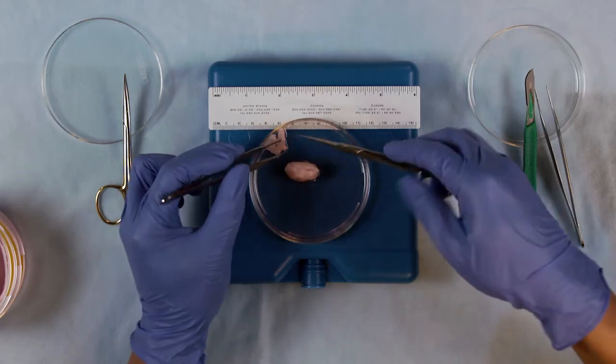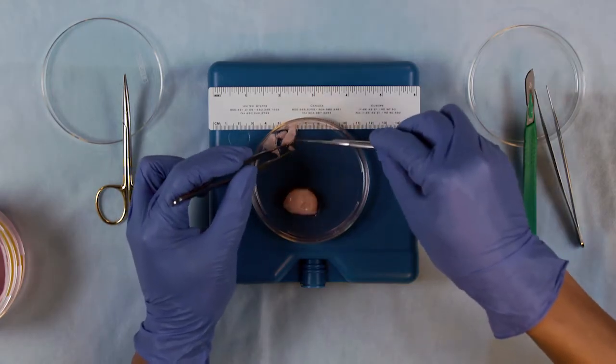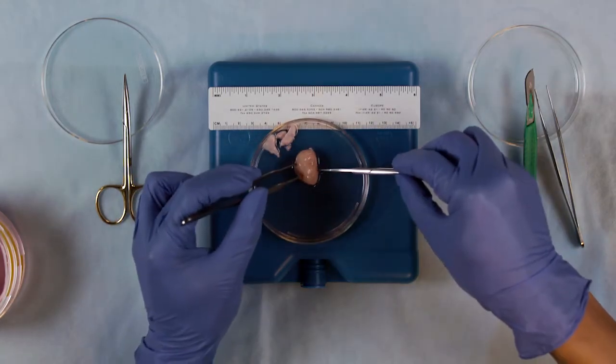After cutting off any ligaments from the tissue, bivalve the ovary or cut it in half on the longitudinal axis.